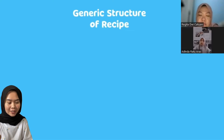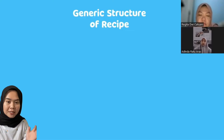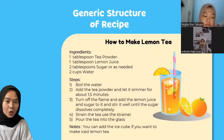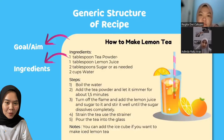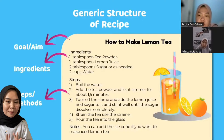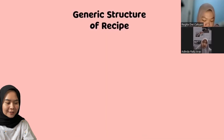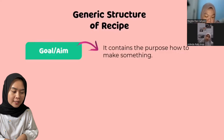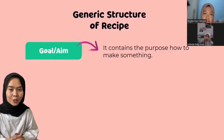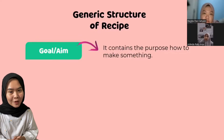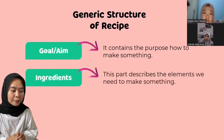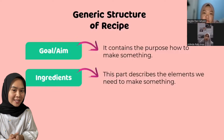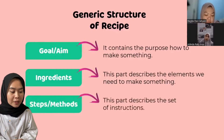Recipe procedure text merupakan teks yang berisikan langkah-langkah untuk membuat suatu makanan. There are three generic structures of recipe procedure text, as we can see from the following example. First, goal or aim — for example, 'How to make lemon tea.' Second, ingredients. And the last one, step or method. Let's understand the structure: Goal or aim contains the purpose of how to make something, usually found in the title. Second, ingredients — this part describes the elements we need to make something.